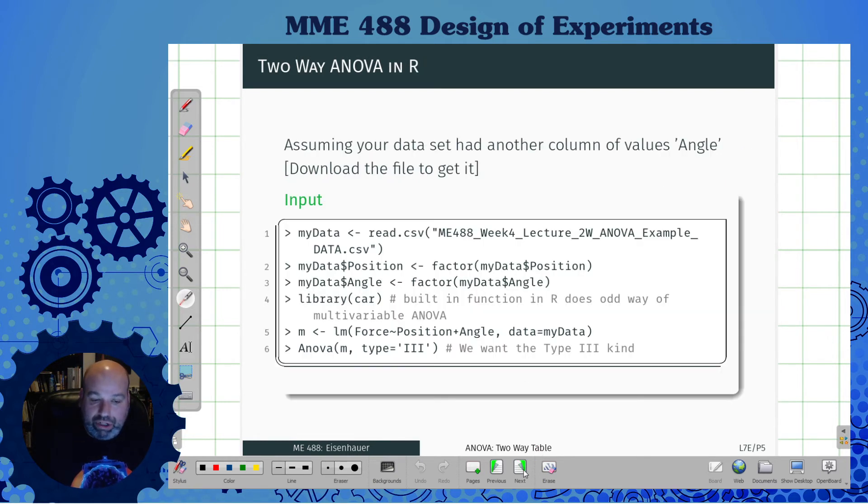So let's do an example to kind of show you how it gets done in R. So again, I'm loading up my data. This time I'm using an angle in there instead. Position and angle are both factors, so I need to do that. I have a special kind of thing in here because I'm doing two ways because R does its own little goofy one, so we're going to do a special one.